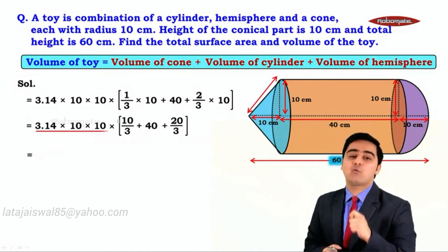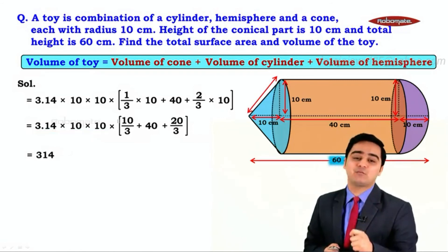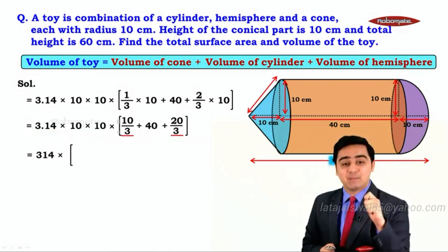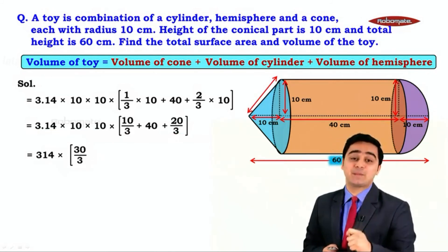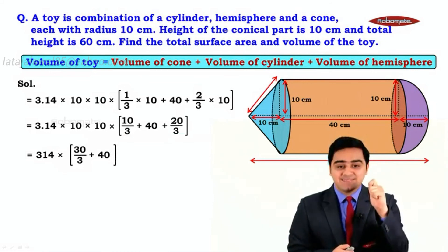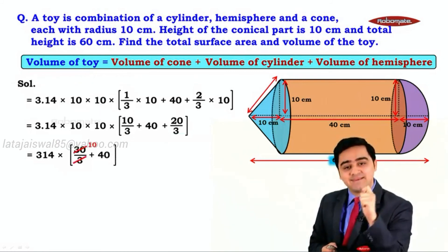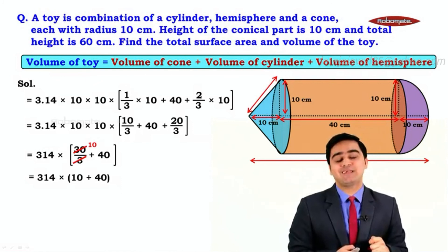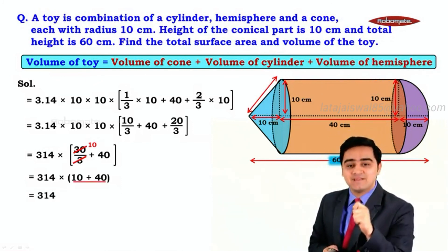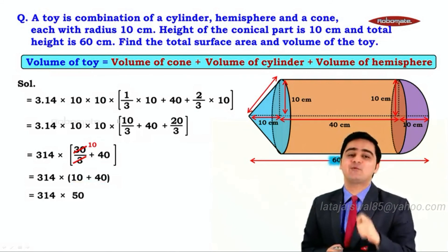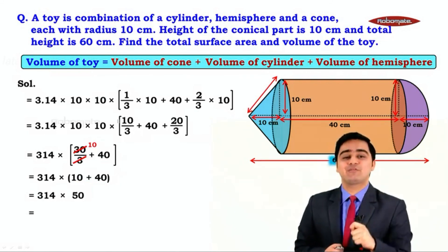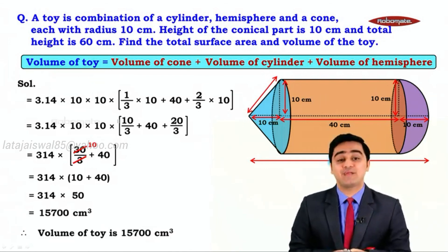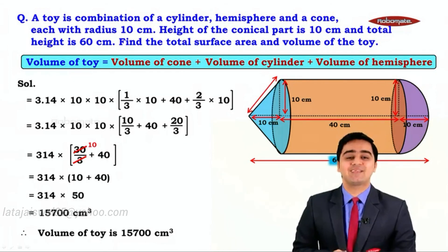3.14 × 10 × 10 gives 314. Inside the brackets, 10/3 + 20/3 = 30/3, which simplifies to 10. So we have 314 × (10 + 40) = 314 × 50, which equals 15700. Therefore, the volume of the toy is 15700 cm³.